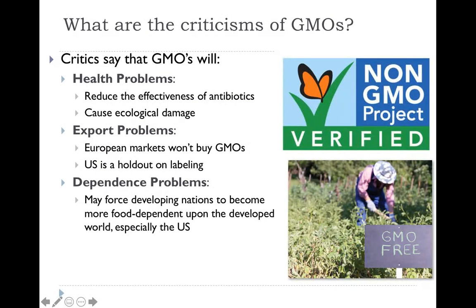When we look at criticism of GMOs, some critics ask: could it bring about health problems? Does it reduce the effectiveness of our antibiotics? Could it cause damage to the ecology of our climate and biomes? There are also exporting problems — European markets won't buy GMOs, so the United States has a lot of GMO products that the European Union will not purchase. GMOs are not allowed in many European countries. There are also dependency problems — this could force specific nations to become more food-dependent on countries like the United States. GMOs are becoming more commonly labeled, and you see products labeled non-GMO with verified symbols increasingly in stores. Labeling is not required in the United States, but there have been bills attempted in the US to force producers to label whether it's a GMO or non-GMO product — though producers argue that would hurt their bottom line.